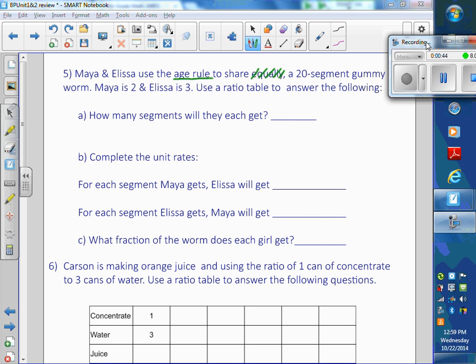Which means that if Maya is 2 and Alyssa is 3, the ratio of their parts is 2 to 3. But what's really important here is you also need a total. So this is Maya and this is Alyssa. You need a total of 5 parts. You have to have how many parts the whole worm is together. Together they are sharing 20 segments.